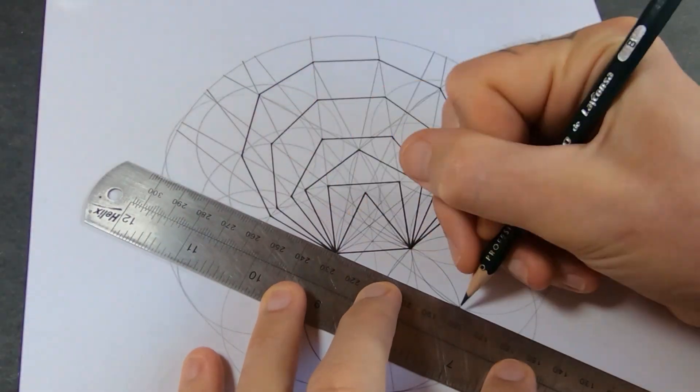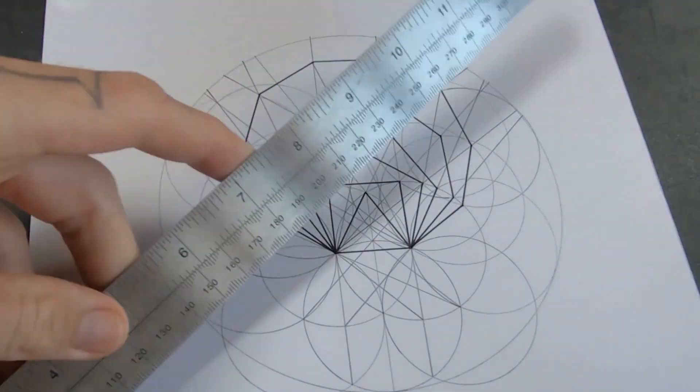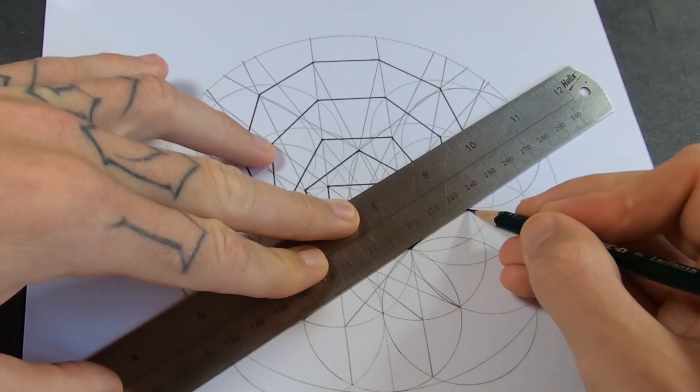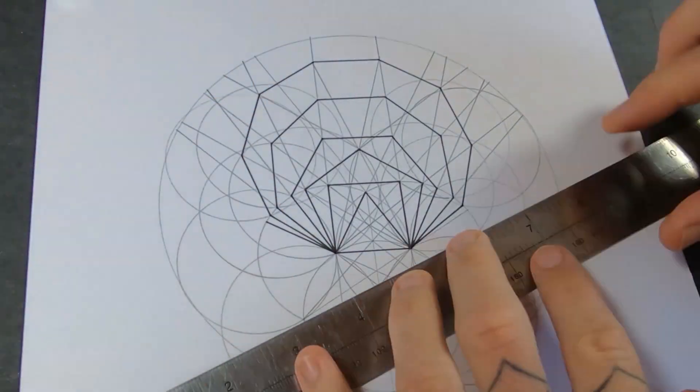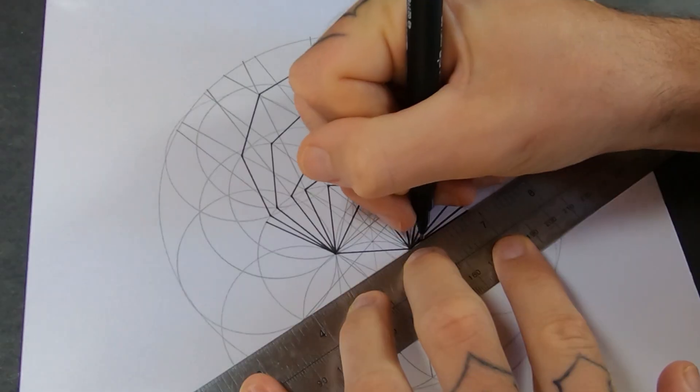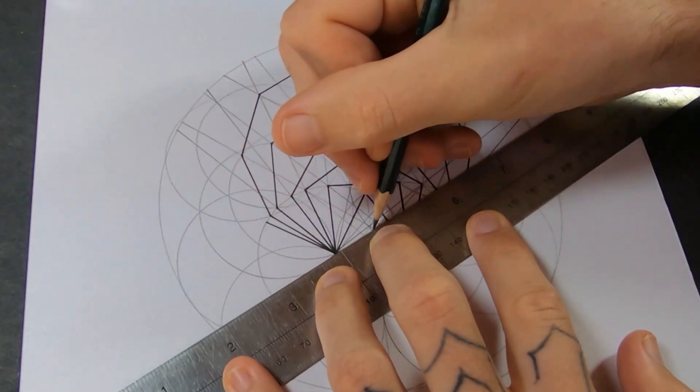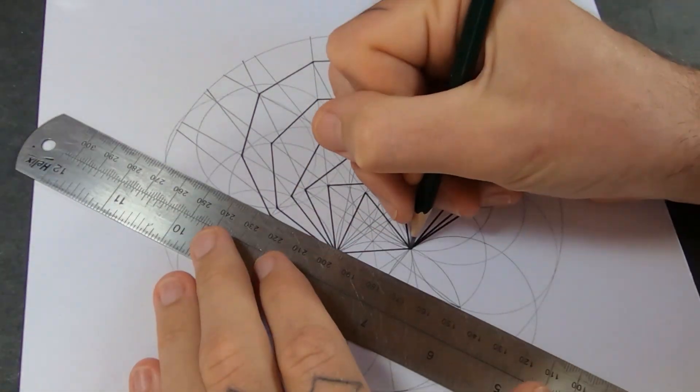Okay, now for the dodecagon. This uses the trinity of circles at the bottom to create the edges at the bottom. Then I'll join the corners of this hexagon and project the lines out. And that will map out the left and right part of the shape.